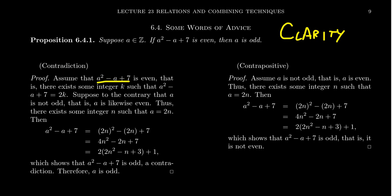Assume that a squared minus a plus seven is an even number. That is, there exists some integer K such that a squared minus a plus seven is equal to two K. So suppose to the contrary, that a is not odd. That is, a is likewise an even number. Thus, there exists some integer N such that a equals two N.